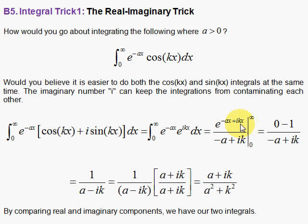At infinity, we're going to get zero because the minus ax is going to kill things off. i kx, that's Euler's relation, it means sines and cosines, but this part here will kill it.